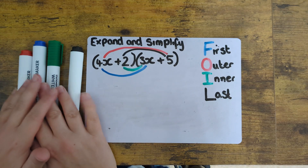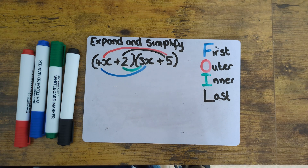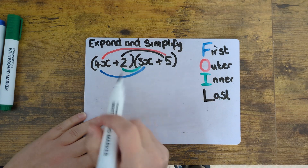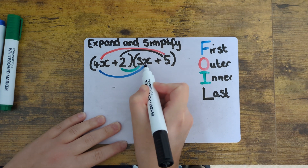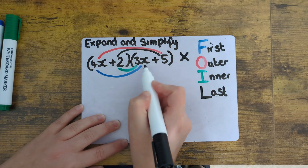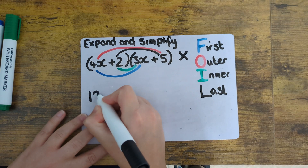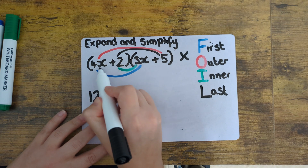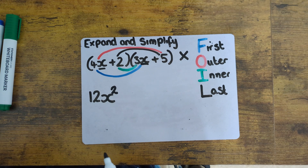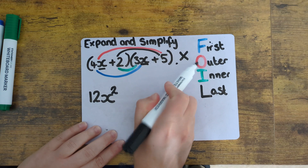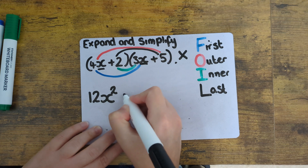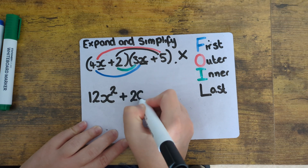Now I'm going to work out each term when they are multiplied together. Starting with the first terms — this is our blue pen. We're multiplying, so we need to do 4x times 3x. 4 times 3 is 12, and because we're doing x times x, the x will be squared. Now onto the outer terms — this is the red pen. We need 5 lots of 4x, so 4 times 5 is 20, so this bit will be 20x.